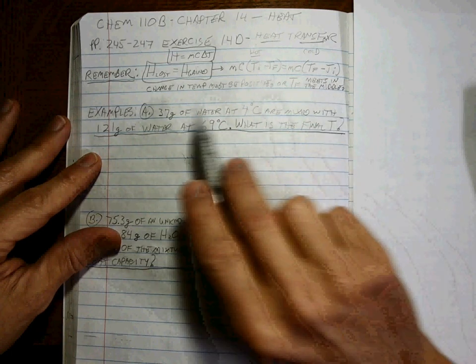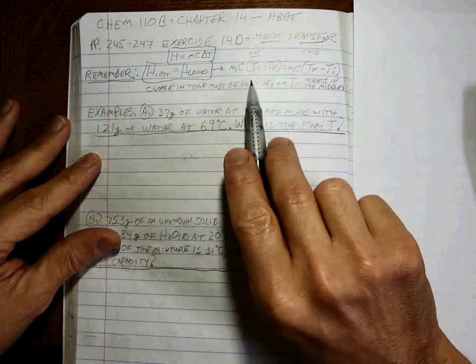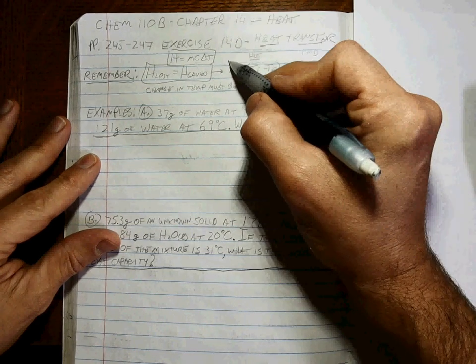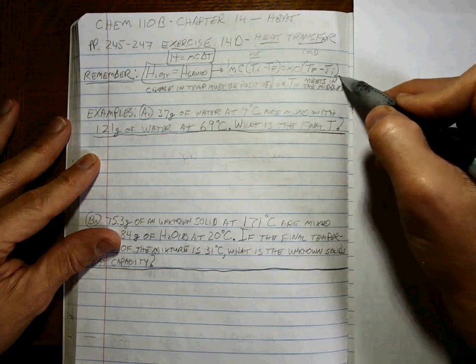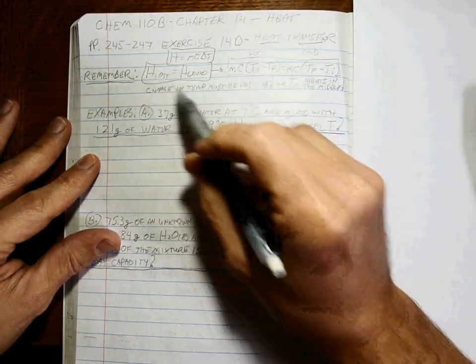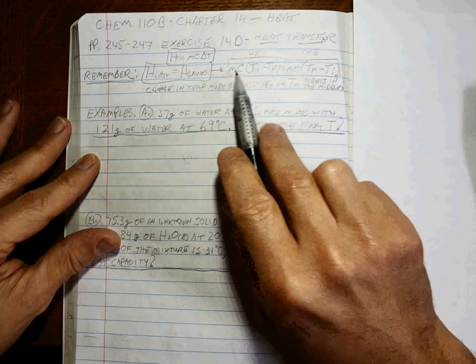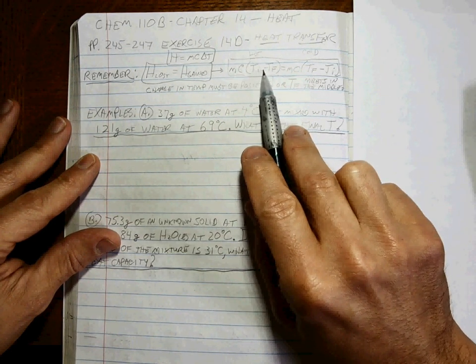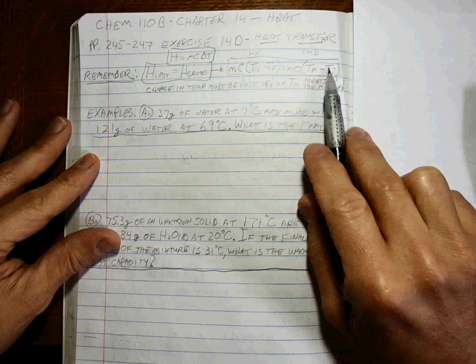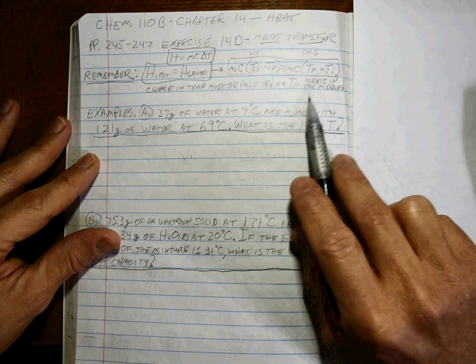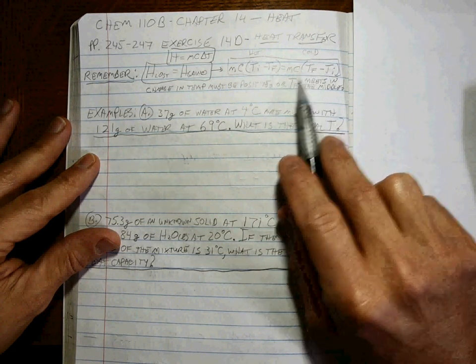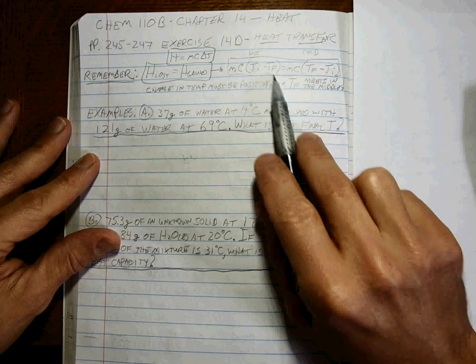And remember, if you have something hot and something cold, the temperature at the end meets in the middle. So we're making sure whenever we do this setup right here, because we're basically saying the heat that's lost is equal to the heat that's gained. Heat is equal to MC Delta T, heat is equal to MC Delta T.